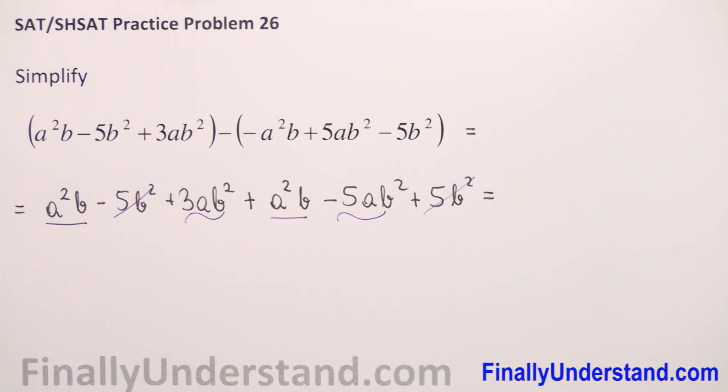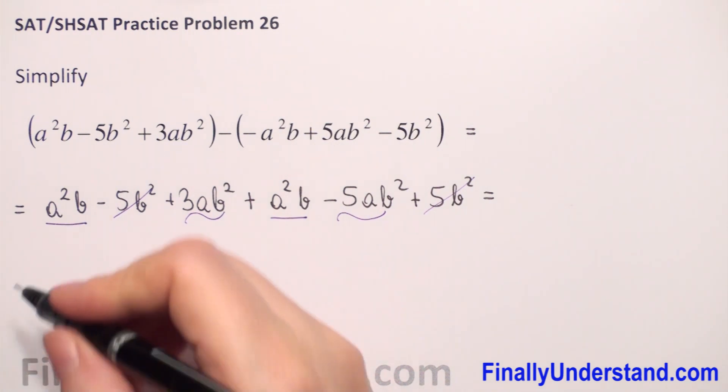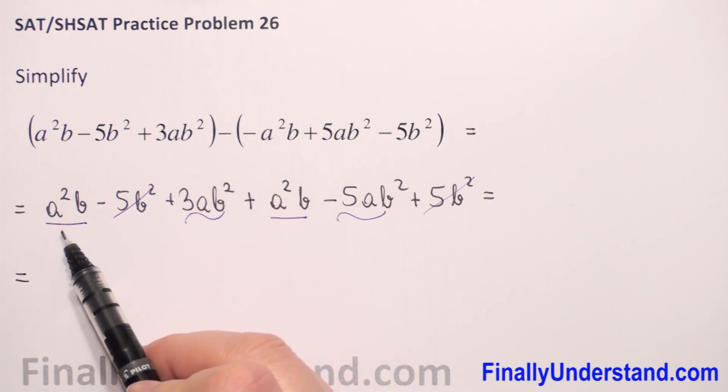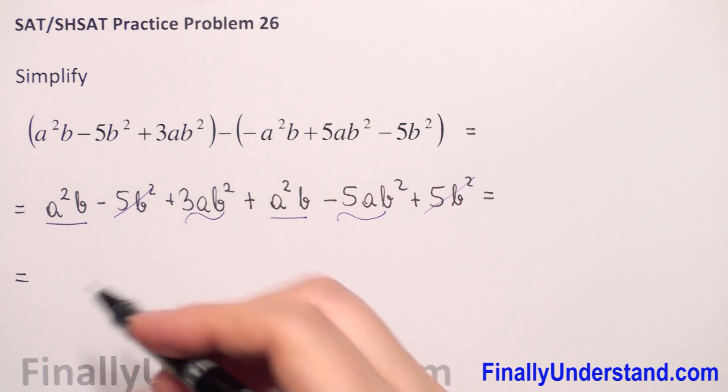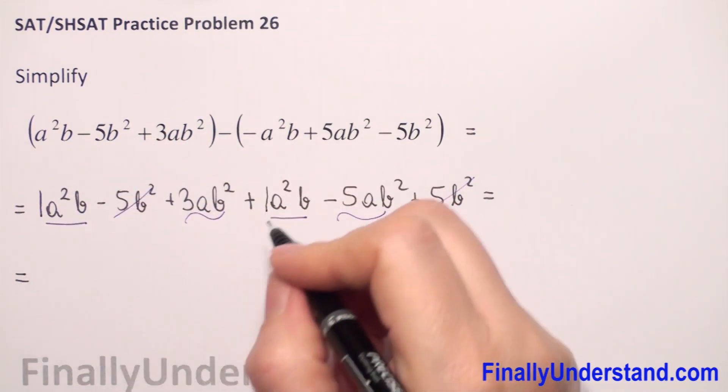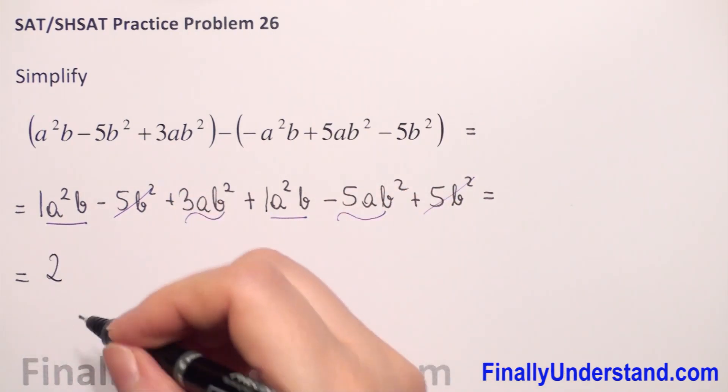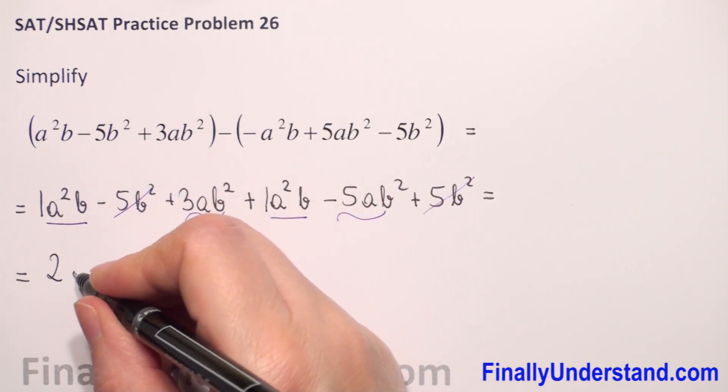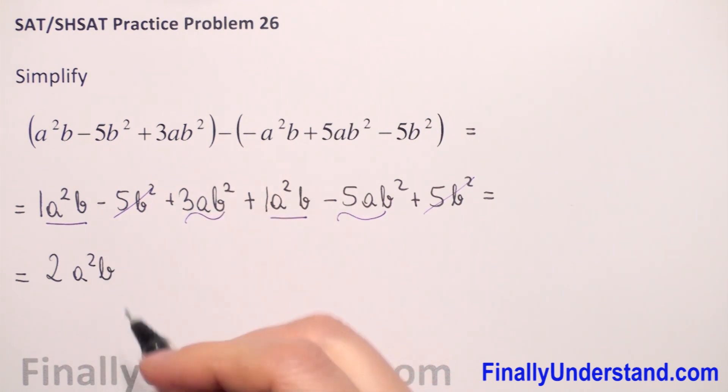So now we can combine the like terms a²b and a²b. Here is like an invisible 1. 1 plus 1 give me 2. And the rest we have to just copy a²b. We have 2 terms a²b.